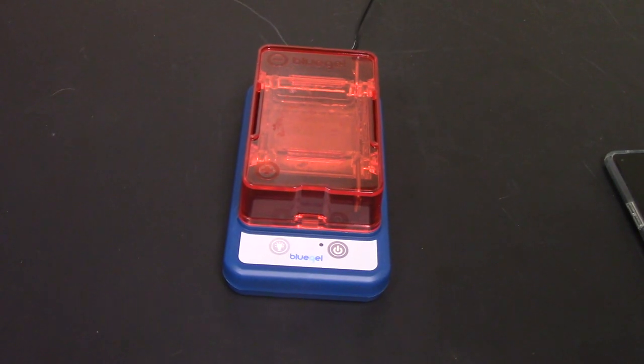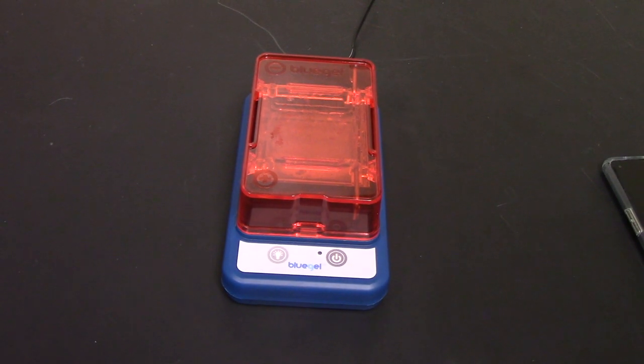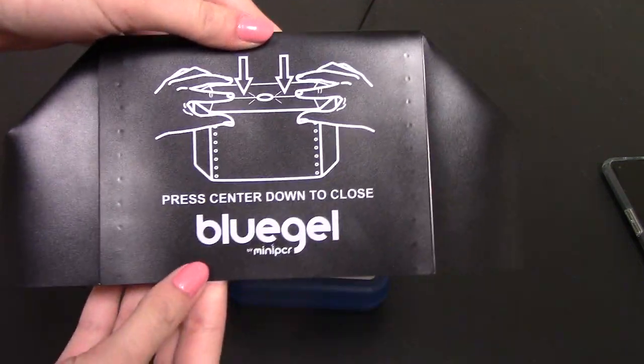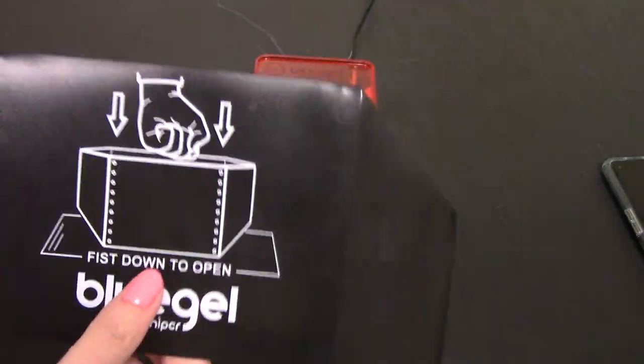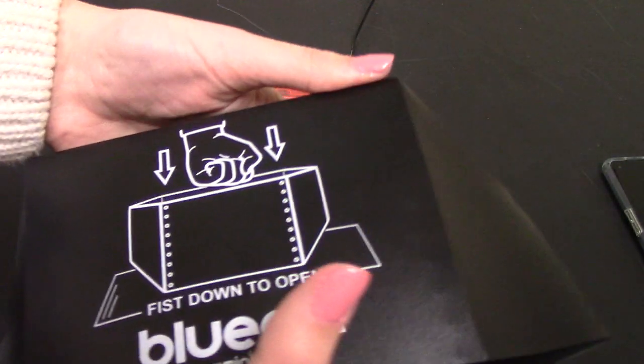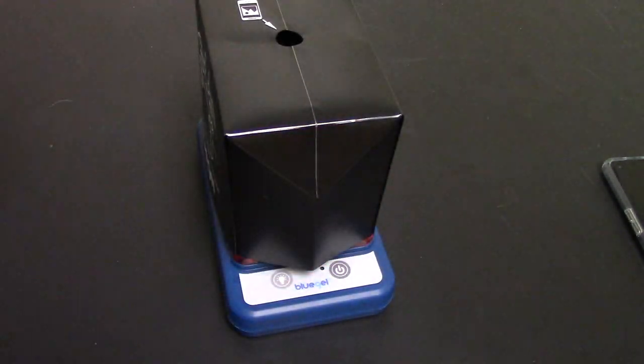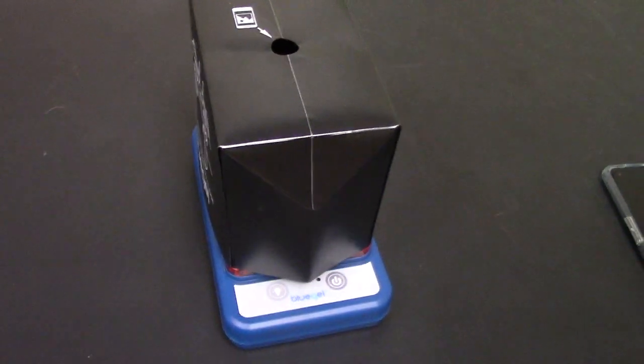My gel is all done running and what I'm going to do to view the gel is use this sort of tent to look at the gel. I'm going to fold it open and put it on top of the gel like that, and now I'm going to take a look at my gel.